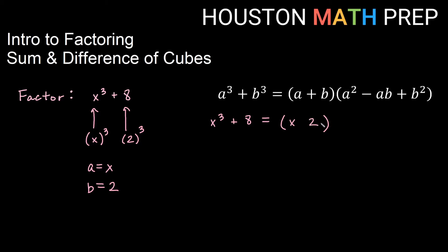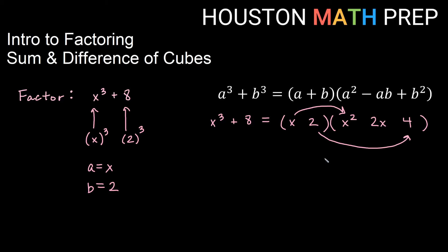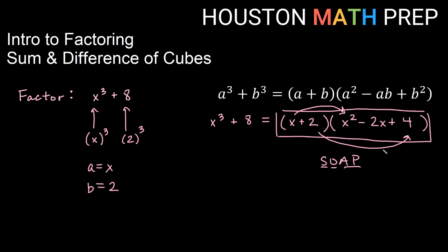For the long factor: squaring the first term gives X squared, squaring the last term gives 2 squared which is 4, and multiplying A and B gives 2X for the middle term. Now applying SOAP — starting with plus, Same is plus, Opposite is minus, and Always Plus for the last term. So X cubed plus 8 equals (X + 2)(X squared − 2X + 4).